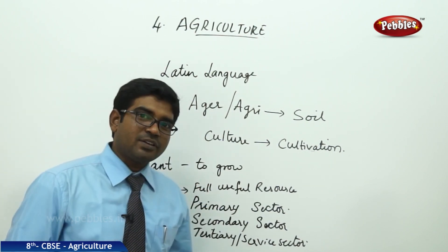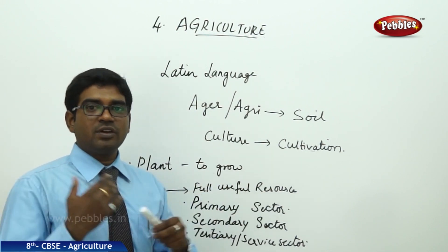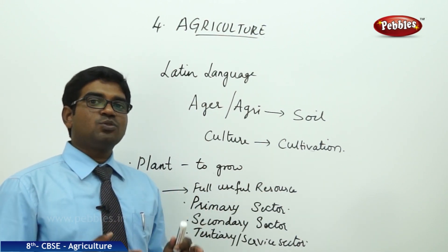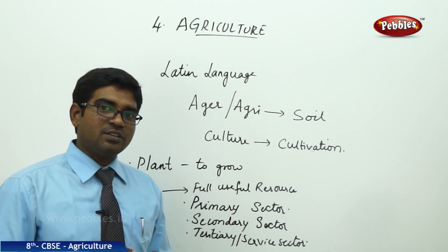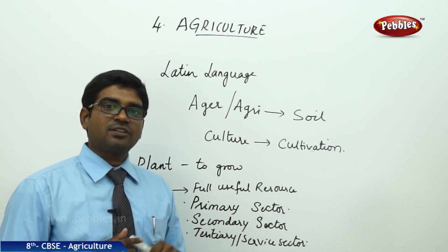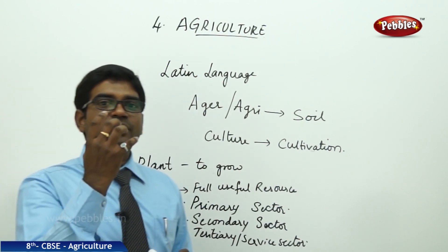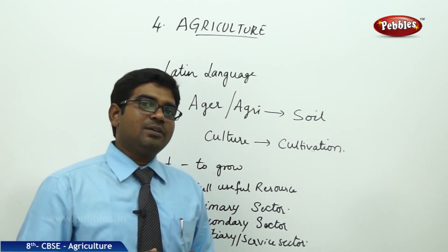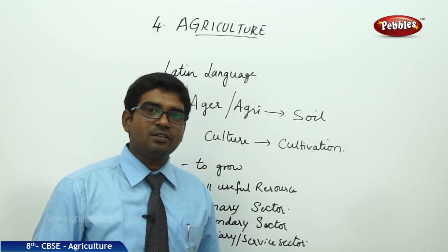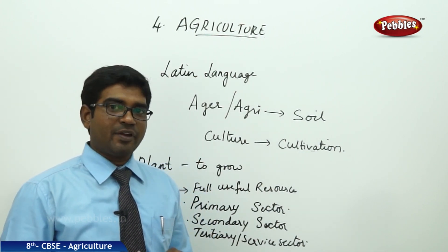So, we have three important sectors. For a plant to grow into a full useful resource, it needs to pass through certain stages: primary, secondary, and tertiary. In this chapter, we will be discussing how agriculture falls into the primary sector and what the role of agriculture is.